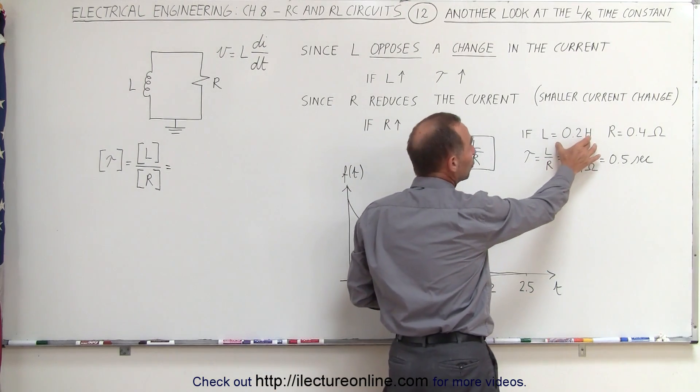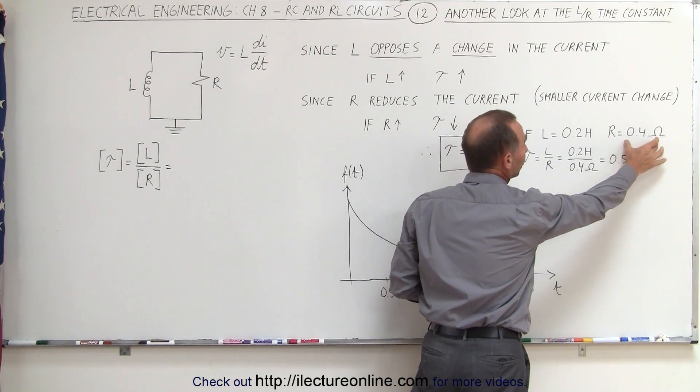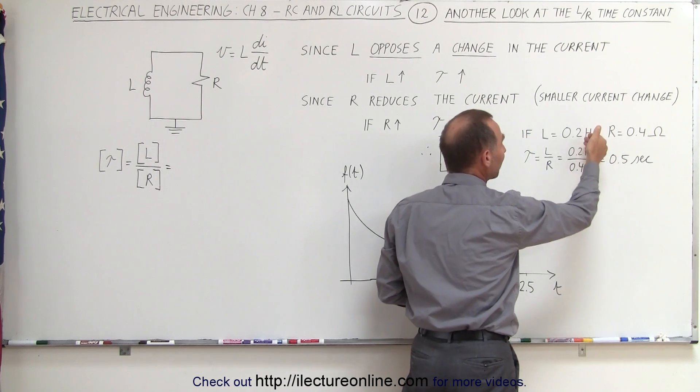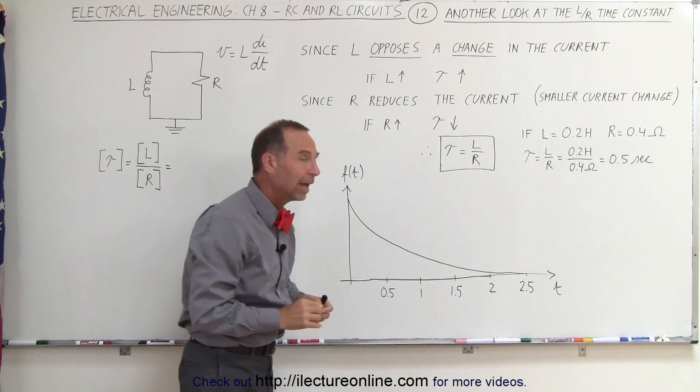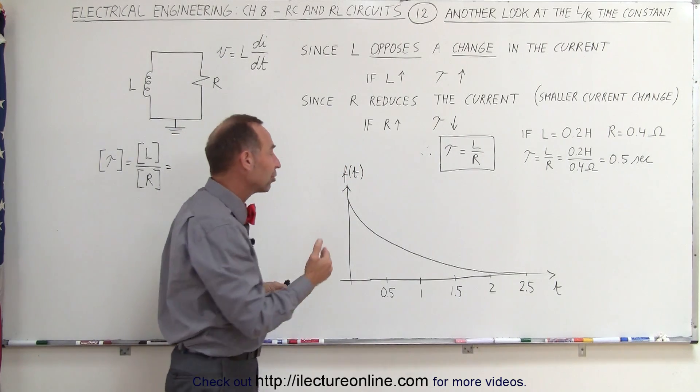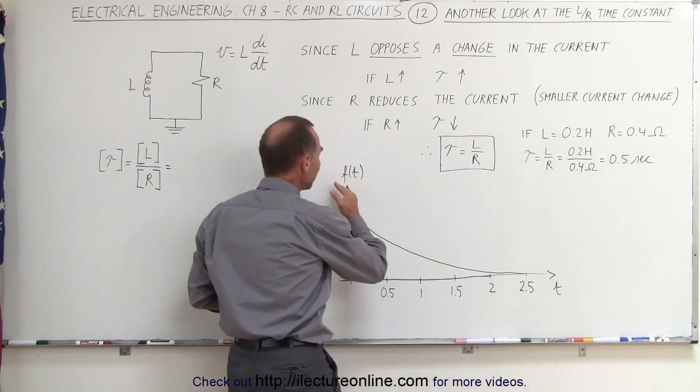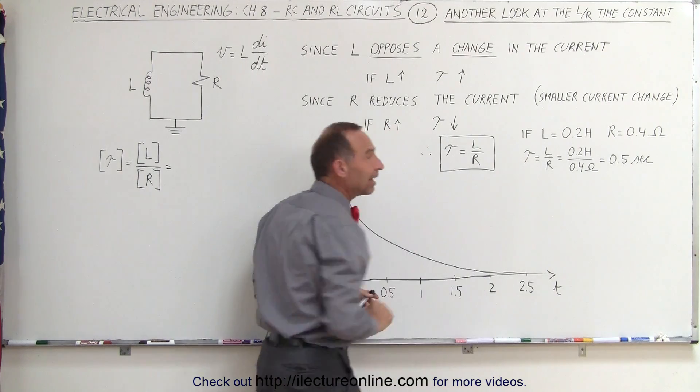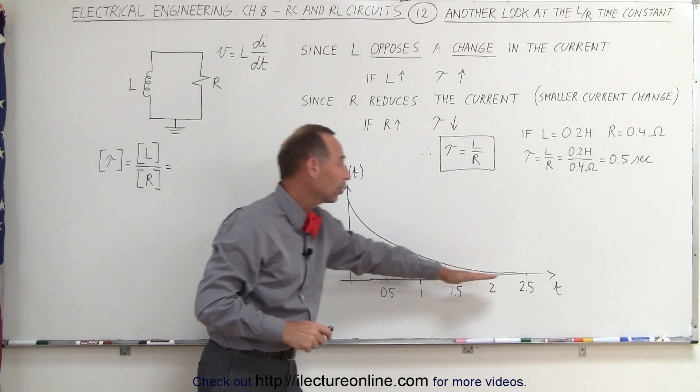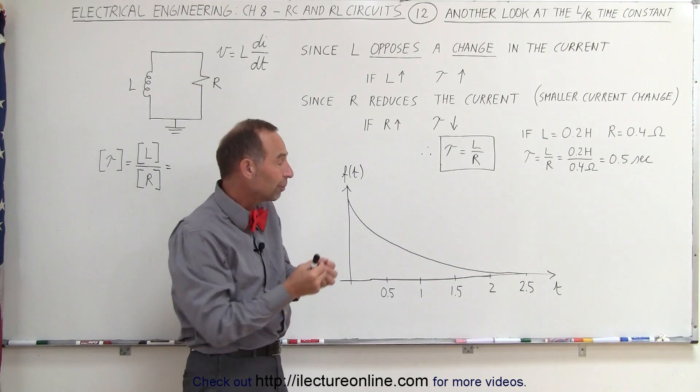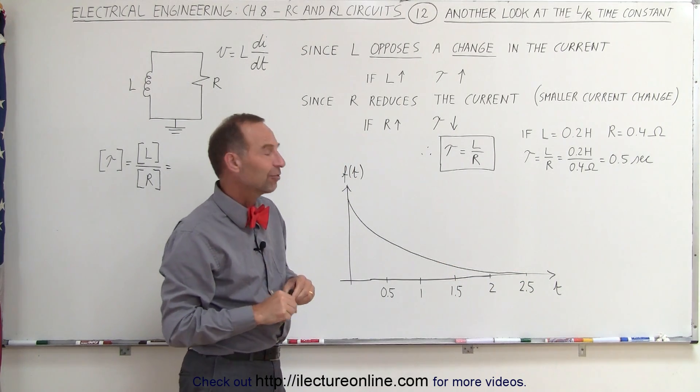As an example, if the inductance is 0.2 Henry's and the resistance is 0.4 ohms, then if you divide the inductance by the resistance, you get a half a second, which is one time constant, and we already have seen that after two and a half time constants, the final steady-state current, or voltage, whatever it is that we're measuring, will be very close to the final amount. In other words, it'll be less than 1% of its final value.